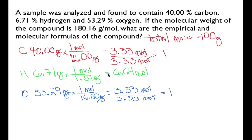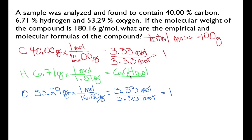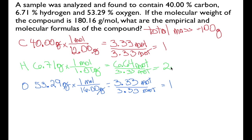We can do the same thing for hydrogen — divide by the smallest molar value, 3.33 moles — and in this case we end up with just about 2. So now we know that the ratio of carbon to hydrogen to oxygen is 1 to 2 to 1. That gives us our empirical formula with all whole numbers, so we don't need to convert any fractions.